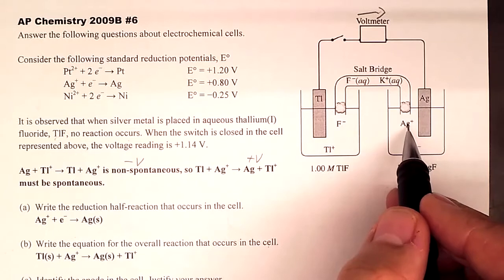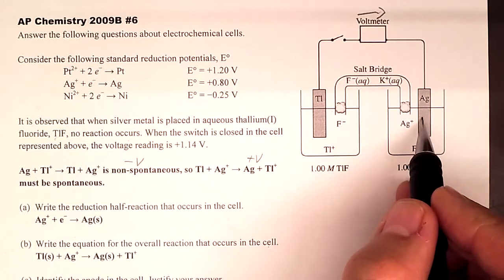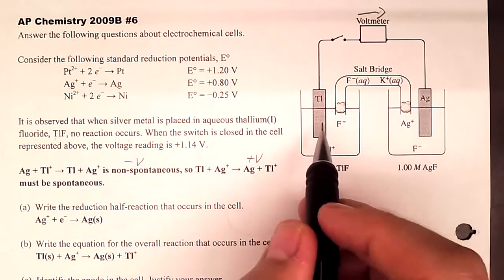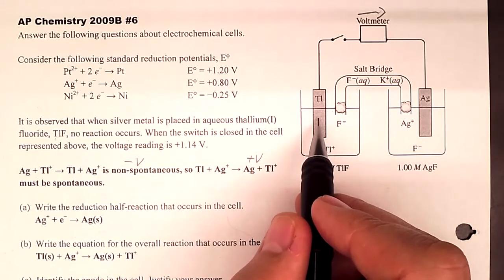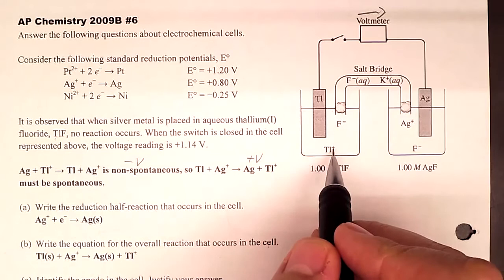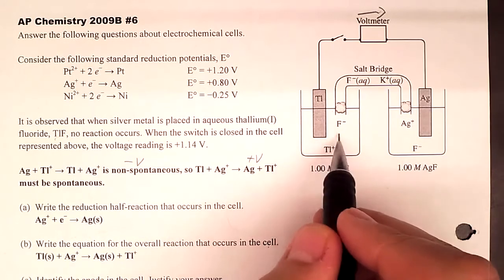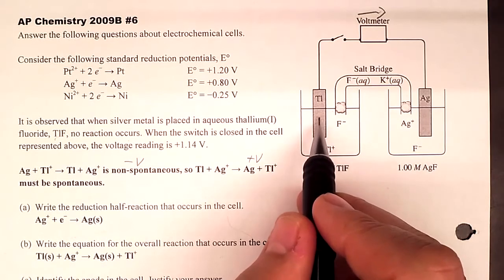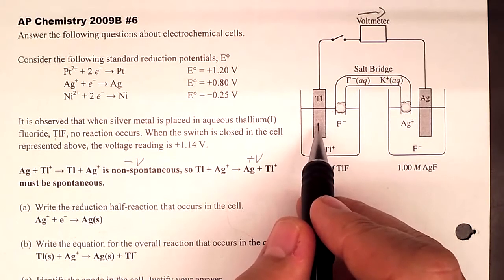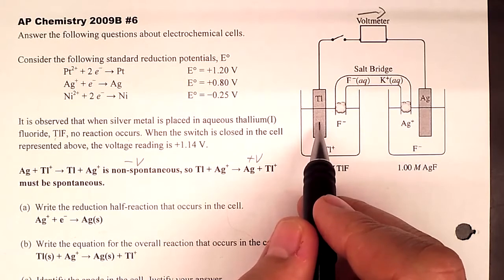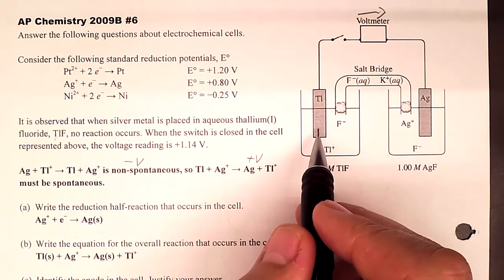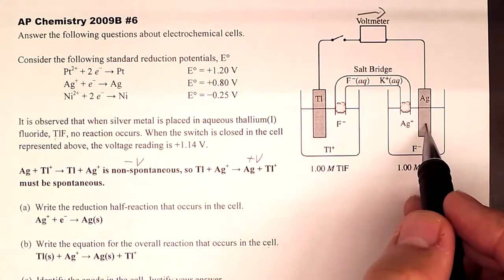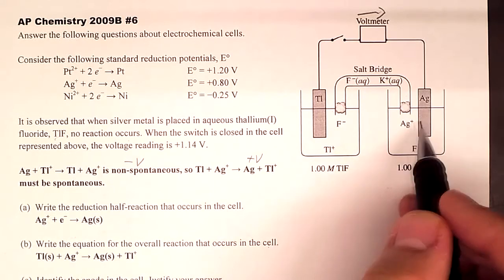At the cathode (reduction), the mass increases as silver ions deposit as solid atoms. At the anode, thallium atoms give up electrons, become cations, and dissolve into solution — the electrode gets smaller, developing pits and eventually holes if it's a thin strip. The cathode gets bumpier and bumpier as silver deposits onto it.